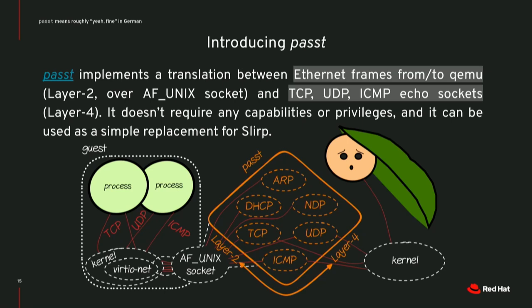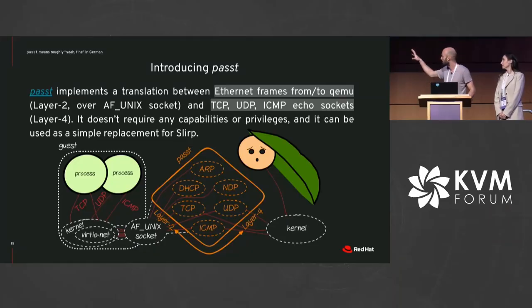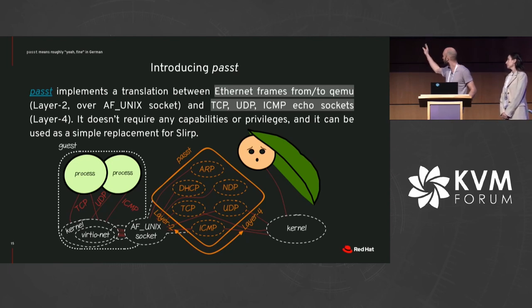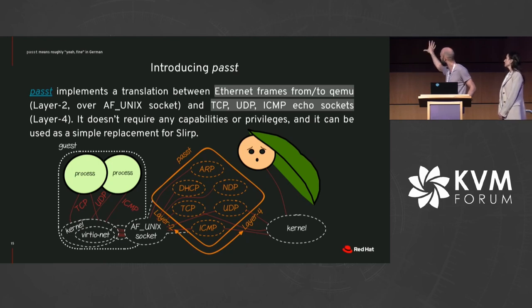Let's take a deeper look at that Passt process. It essentially implements a translation between layer 2 frames — on the left you have a Unix domain socket from QEMU with Ethernet frames, and on the right you have layer 4 sockets: TCP, UDP, ICMP. That's what the kernel allows. This needs internal knowledge of TCP and UDP: when Passt sees Ethernet frames, it infers that a TCP connection is going on and opens the corresponding socket on the host side.